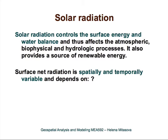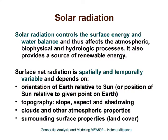What controls these dynamics? First of all, it is controlled by the orientation of Earth relative to the Sun — or, in other words, it is dependent on the position of the Sun relative to a given point on Earth. Another important parameter is topography: depending on its slope, aspect, and shadowing, the solar radiation will change. Another highly dynamic component that influences solar radiation is clouds and atmospheric properties. And, a little bit more stable but also influential can be surrounding surface properties, such as land cover and especially things like water or snow.